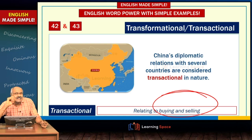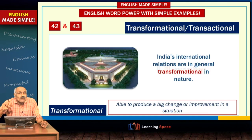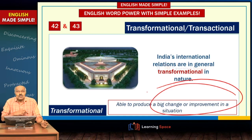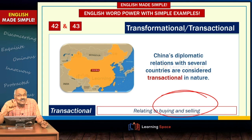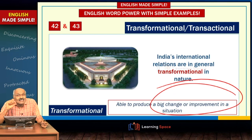'Transformational' is quite a big word — it means looking at big change or improvement. In international relations, India's international relations are considered transformational in nature, whereas China's are transactional. Because of investments through the Belt and Road Initiative, several countries were thrown into debt traps; critics point out China's relations are transactional, while India's are transformational — India tries to bring change through people-to-people contacts and cultural connect.